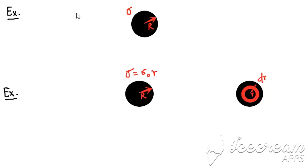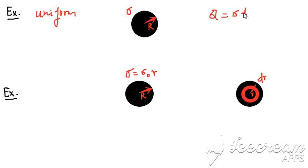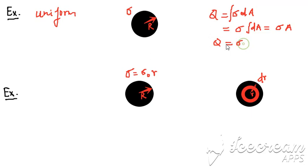Consider Example 1 where the charge distribution is uniform and the charge density σ is known. The total charge is the integral of σ dA. Since σ is constant for uniform distribution, this becomes σ times the integral of dA, which equals σ times A. The area of a uniform disk is π R², so the total charge is Q = σ × π R².